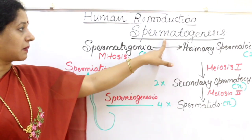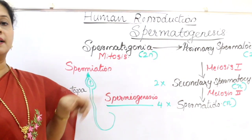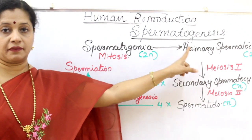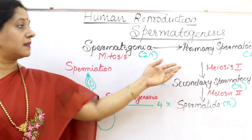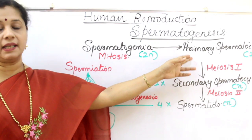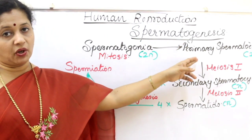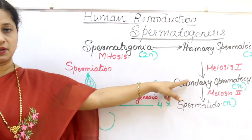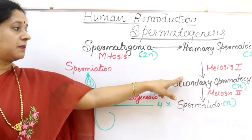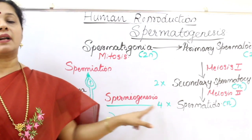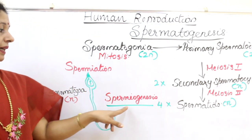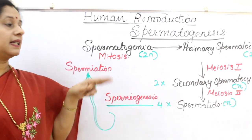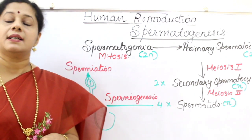Please don't confuse spermatogenesis, spermiogenesis, and spermiation. To recap: spermatogonia continuously divide by mitosis to form primary spermatocytes, which are diploid. Primary spermatocytes undergo meiosis 1 to form secondary spermatocytes, which are haploid. Secondary spermatocytes become spermatids through meiosis 2. Spermatids transform into sperm by spermiogenesis, then the sperm embed their head in Sertoli cells and are released out by the process called spermiation.